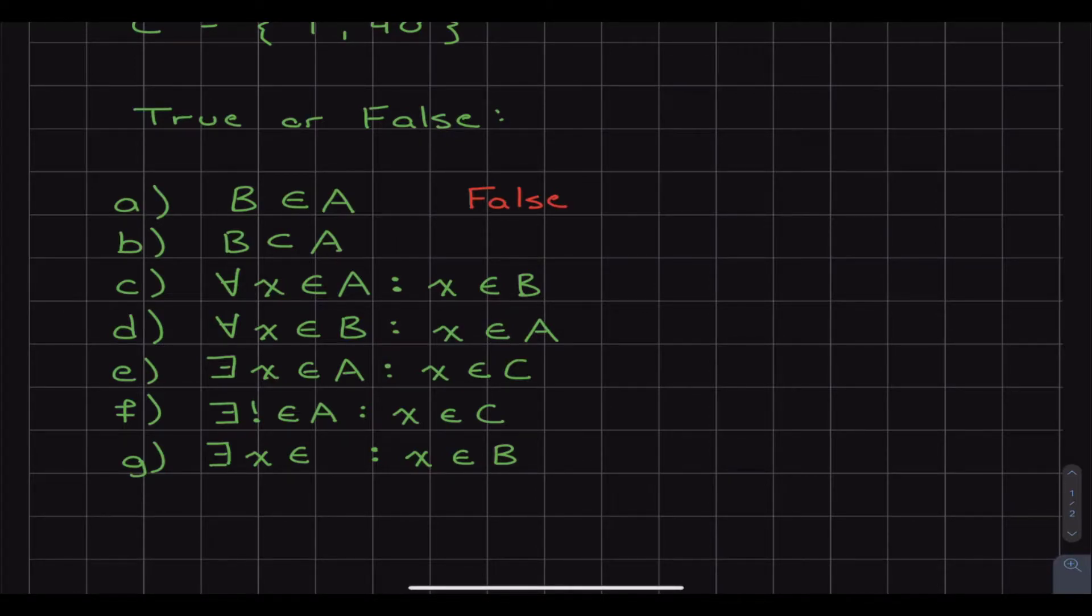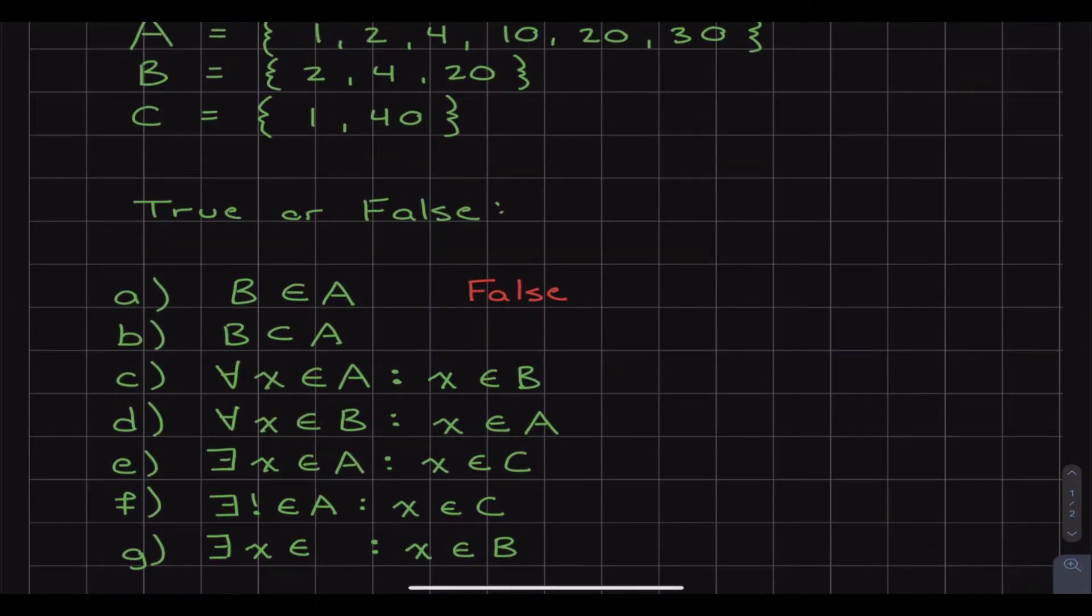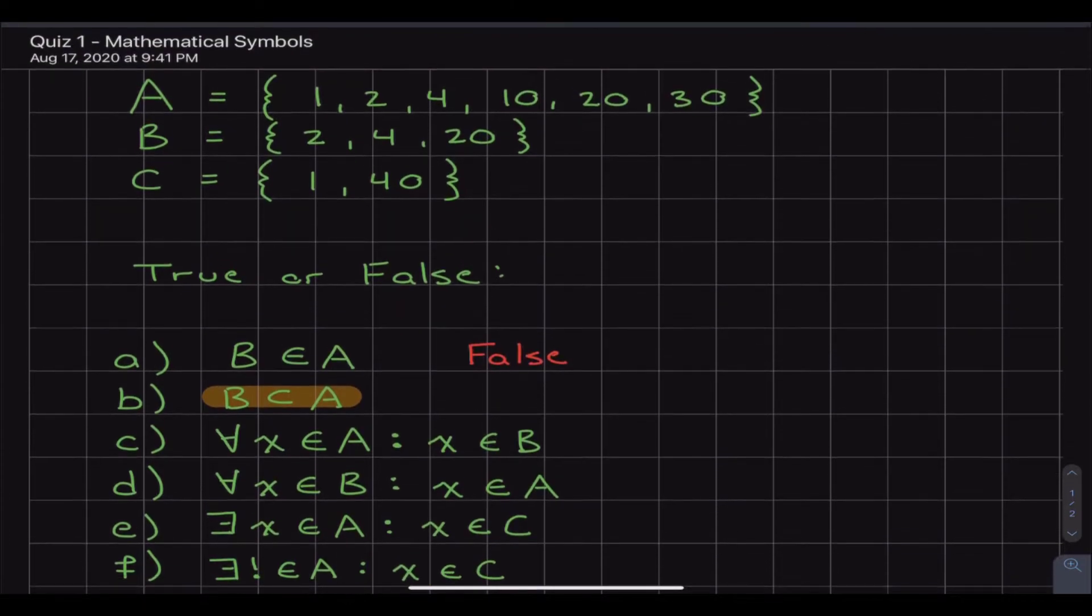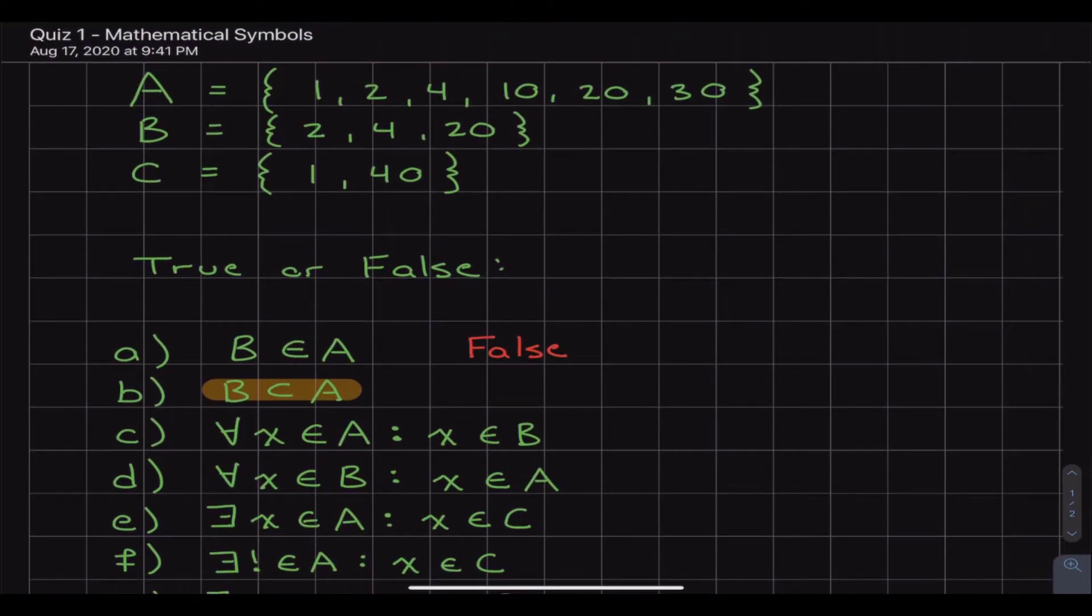Now, it can be modified to what it says in part b, where it says is B a subset of A. So by changing that little fancy E to a fancy C, even though they're not C's and E's, that changes from element to subset. And what a subset means is basically are all the numbers that are found in B also found in A.